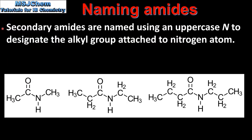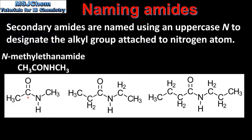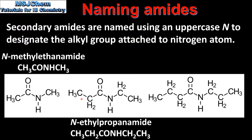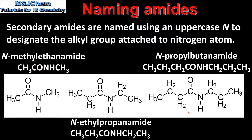Next we look at naming secondary amides. Secondary amides are named using an uppercase N to designate the alkyl group attached to the nitrogen atom. Our first example is a 2 carbon amide, giving the name ethanamide, with one methyl group bonded to the nitrogen atom — this gives the name N-methyl ethanamide. Our second example is a 3 carbon amide, giving propanamide, with an ethyl group bonded to the nitrogen atom, giving N-ethyl propanamide. Our last example is a 4 carbon amide, butanamide, with a propyl group bonded to the nitrogen atom, giving N-propyl butanamide.